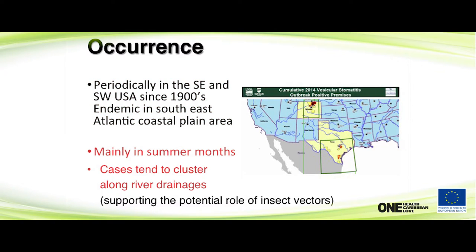It's present in the southern United States and has been endemic there for quite a long time, especially in the Atlantic Coast area. It's present in summer months because it's associated with insects, and it tends to cluster along river drainages because that supports insect replication.